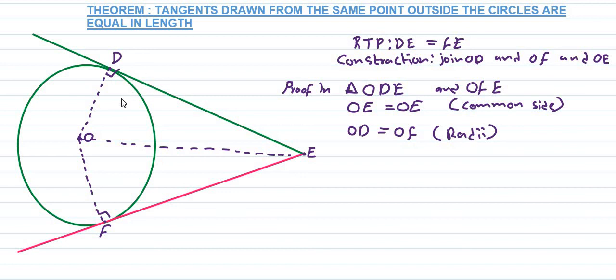The radius is perpendicular to the tangent. Therefore, angle ODE equals angle OFE, and both are 90 degrees.